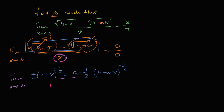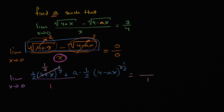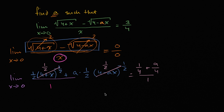So evaluating as x approaches zero: four plus zero to the negative one-half is four to the negative one-half, which is one-half. And four minus a times zero to the negative one-half is also four to the negative one-half, which is one-half. So we have one-half times one-half, which is one-fourth, plus a times one-half times one-half, which is a over four. That simplifies to a plus one over four.